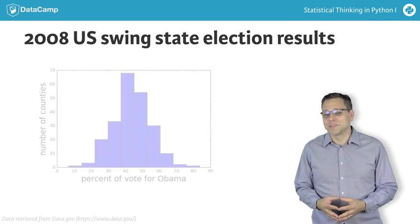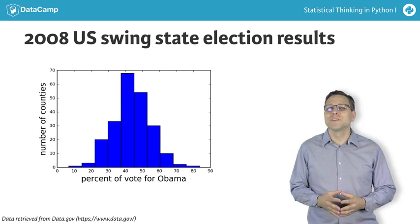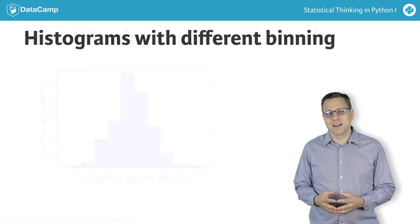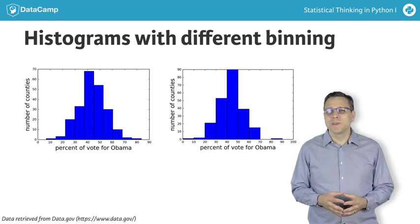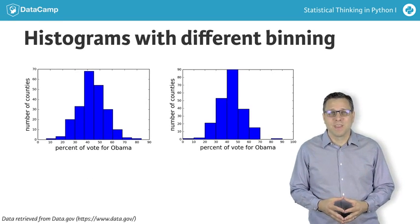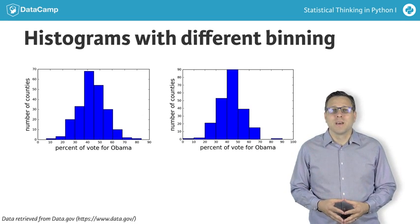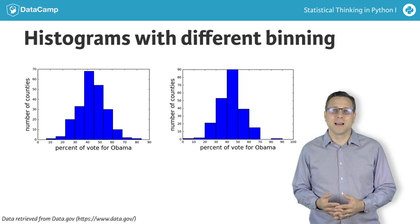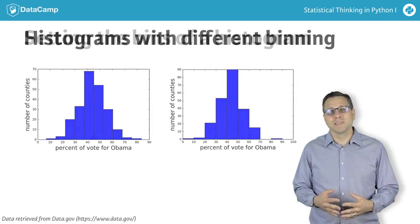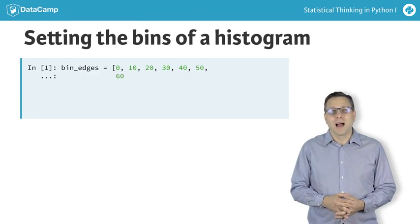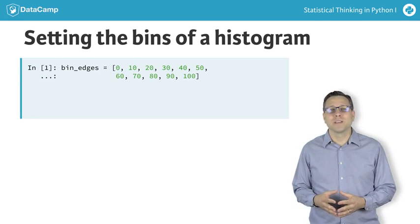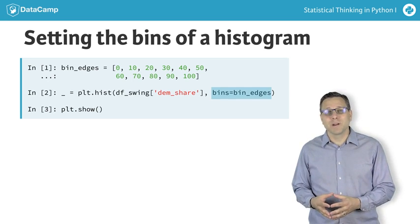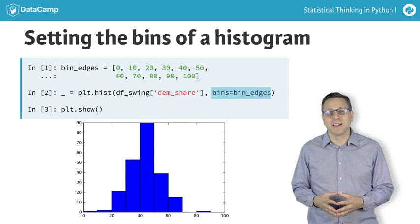You probably didn't notice, but this plot looks slightly different than the first plot I showed. You can see it if you look at them side by side. They are different because they have different binning. In the plot on the left, we have ten bins generated automatically by the default settings of plt.hist, and I set up the bins on the right by myself. I specified where the edges of the bars of the histogram are — the bin edges — and used the bins keyword argument to pass that to plt.hist.